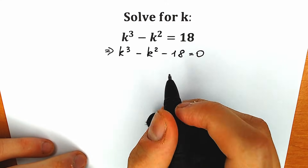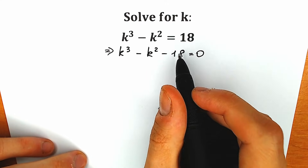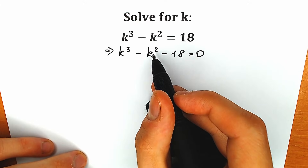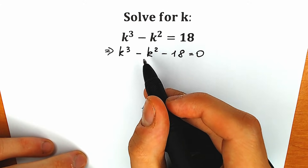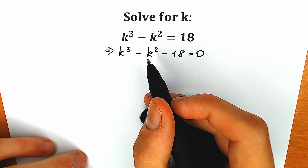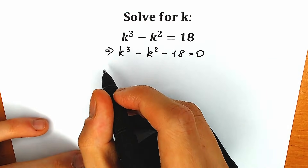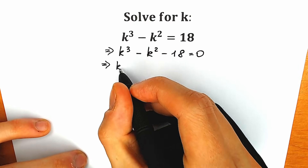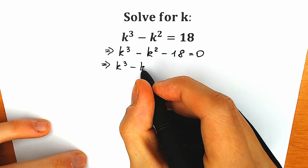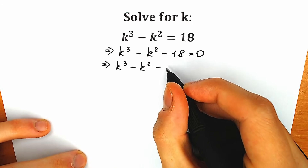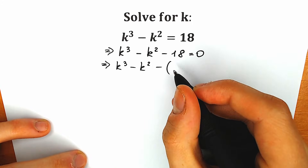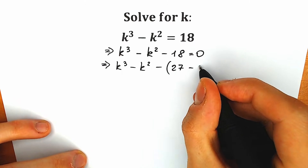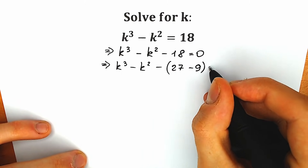The next thing: instead of this 18, let's write 27 minus 9. Right here we have third power, right here we have second power, and 27 and 9 are great constants to express in terms of cubes and squares. So we have k cubed minus k squared minus 27 minus minus 9 equal to 0.